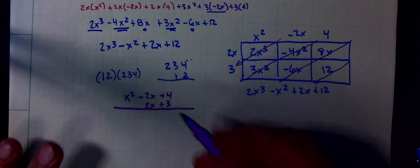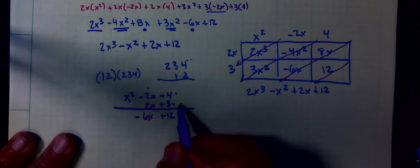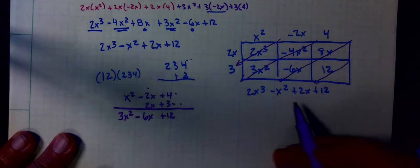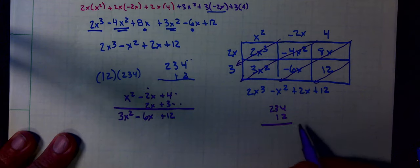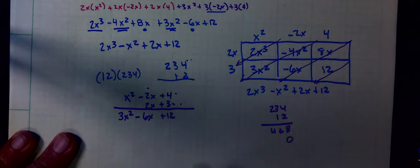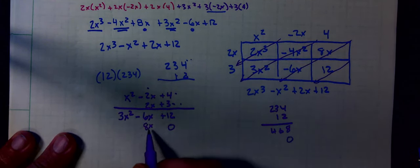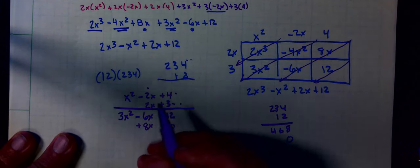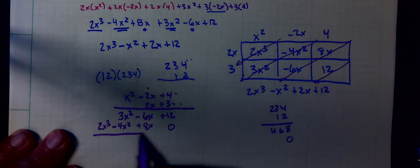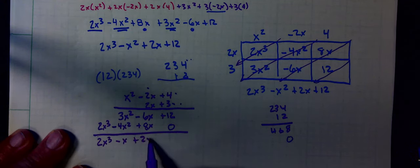Now I'm going to do the multiplication. 3 times 4 is 12. 3 times negative 2x is negative 6x. 3 times x squared is 3x squared. Remember when you do this multiplication, we have a 0 as a place holder. I'm going to do the same thing. 2x times 4 is 8x. 2x times negative 2x is negative 4x squared. 2x times x squared is 2x cubed. Add vertically: 2x cubed, negative x squared, 2x, plus 12.